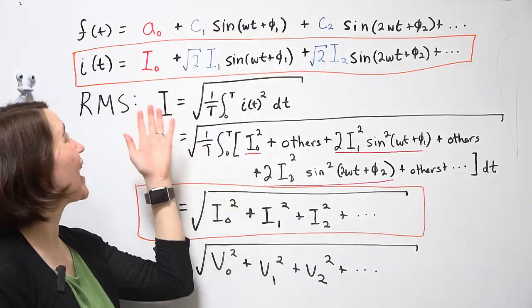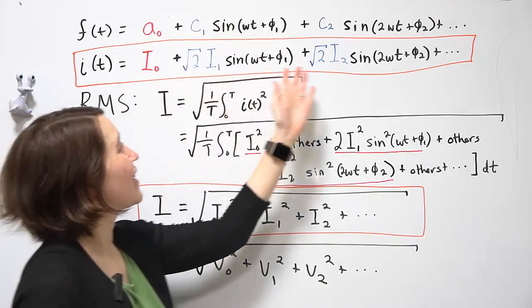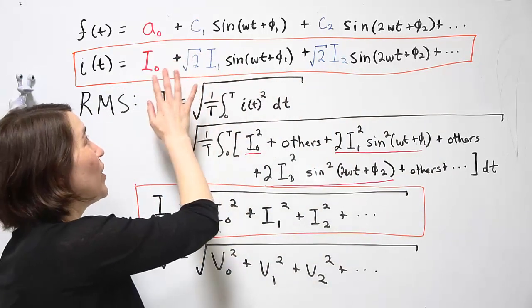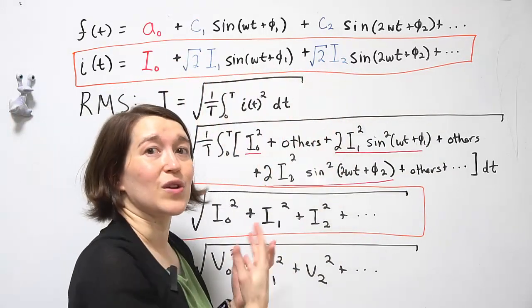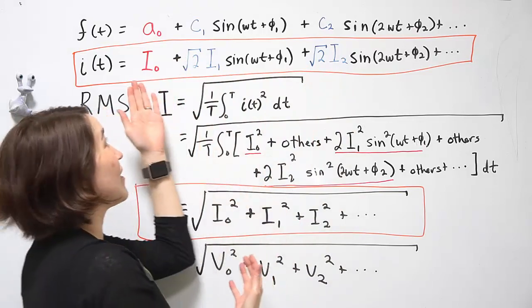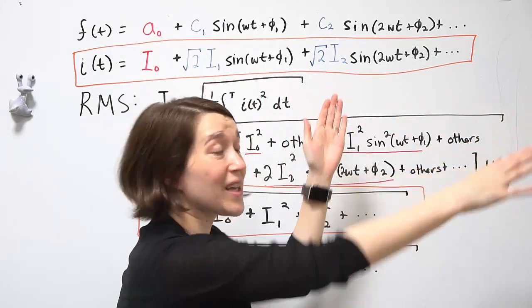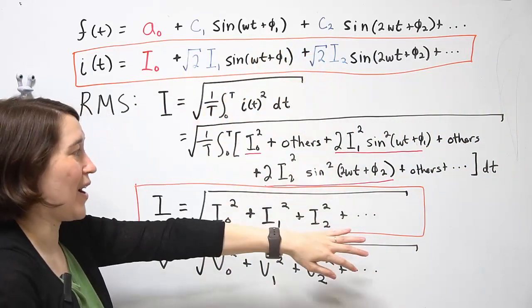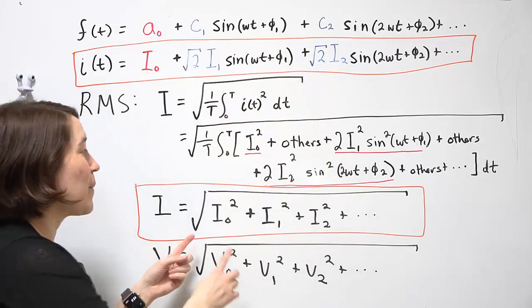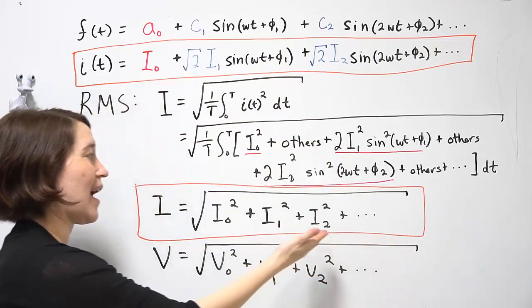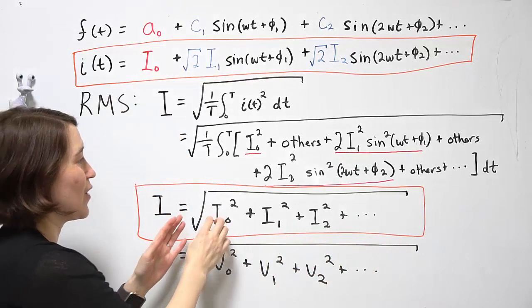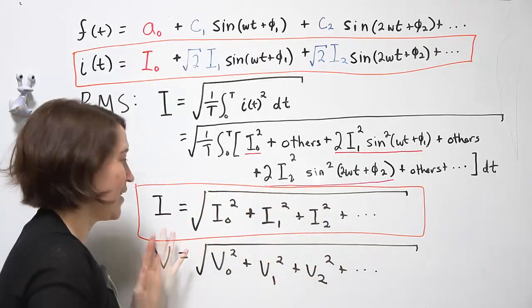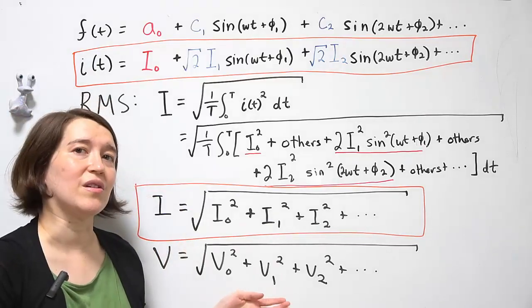So if we take a waveform and we write it in this form for the Fourier series expansion, we have the RMS values for each of the components, including the DC, fundamental, and the higher order harmonics. We can find the RMS value from each of these individual components and we find that they have this relationship for each of the components relative to the overall RMS value for the waveform. So these are important equations to remember.